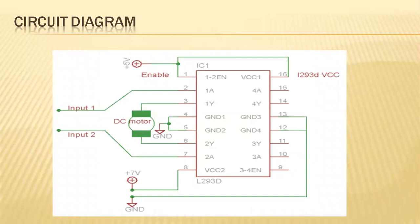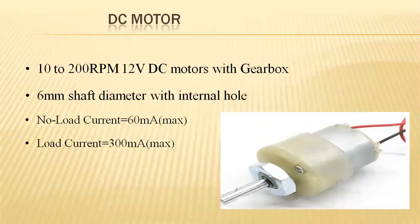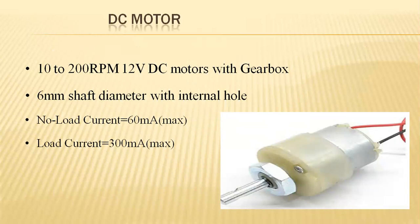The circuit diagram shows the connectivities for the DC motor and different links getting connectivity with respect to the DC motor for better functionality. In manufacturing we give the connectivities as per the diagrammatical basis. The DC motor has a capability of 10 to 200 RPM and is operated with 12 volts of DC power supply.